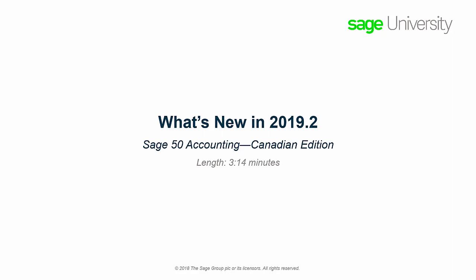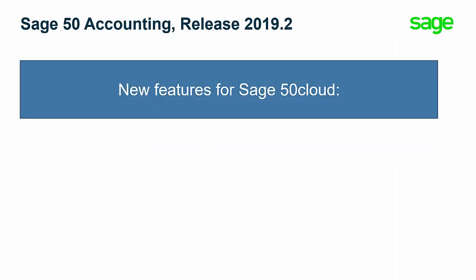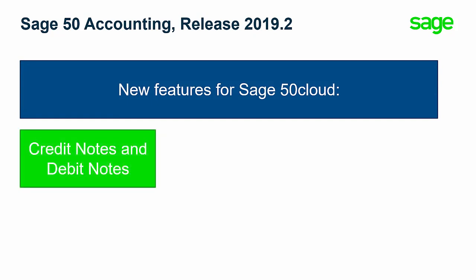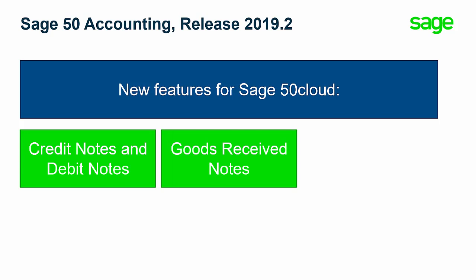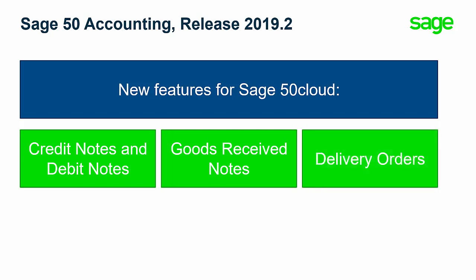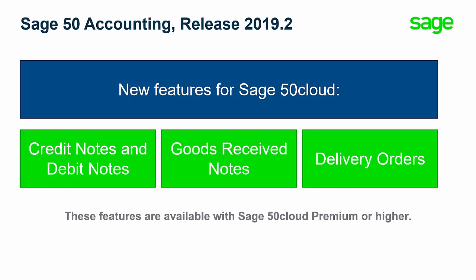Welcome! Over the next few minutes, we will show you what's new in Sage 50 Accounting Canadian Edition Release 2019.2. This release includes three new features for Sage 50 Cloud users: credit notes and debit notes for customers and vendors, goods received notes for vendors, and delivery orders for customers. Please note that these features are available with Sage 50 Cloud Premium or higher.